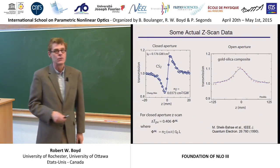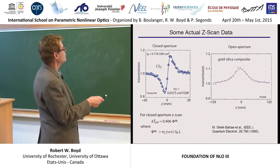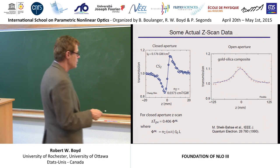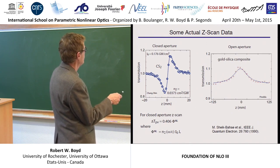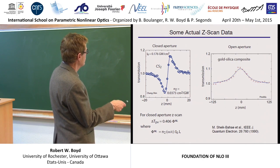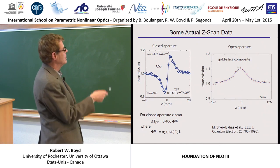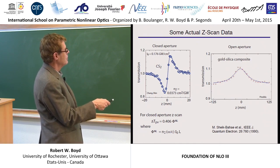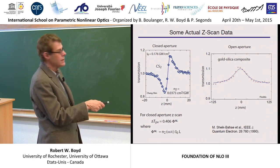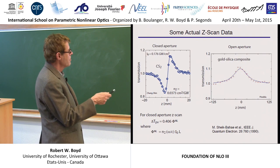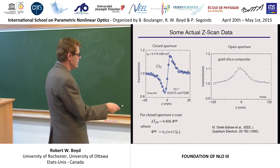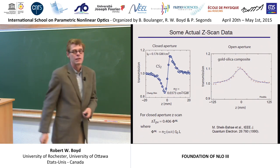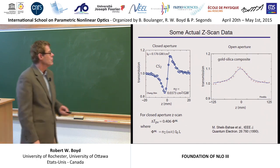Just to let you know that this is for real, here is some actual Z-scan data from my own research group. For carbon disulfide, I said that this was a calibration standard — this is what we got, and it agrees with the literature value close enough. And here was a gold-silica composite. Gold is highly nonlinear; you can disperse gold nanoparticles in silica glass. This was the transmission that we received, and it was Sheik Bahai and his coworkers in Central Florida who came up with this idea.